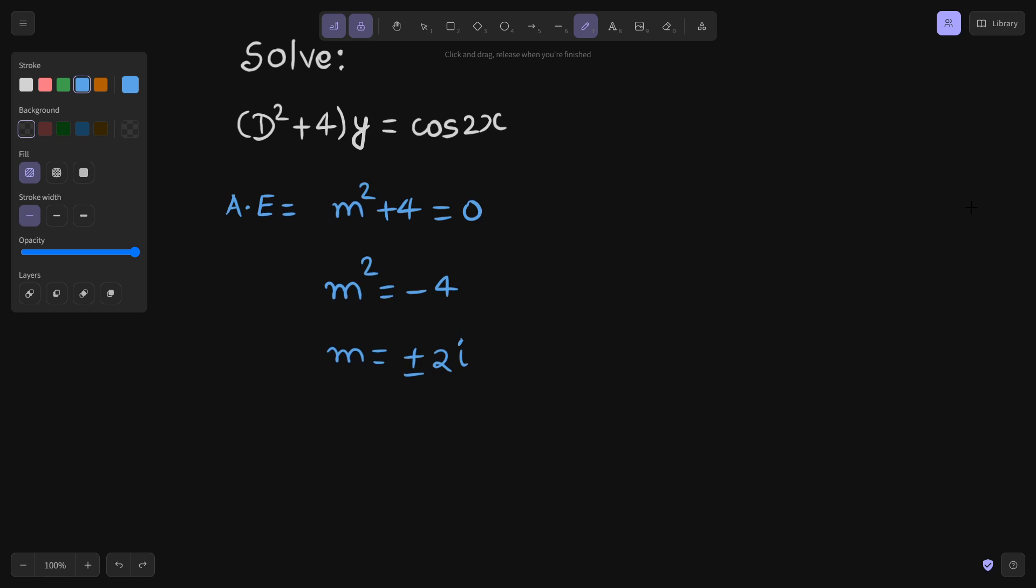In case roots are imaginary, then how we find the complementary function? Because you can write this like 0 plus 2 iota taking plus sign and 0 minus 2 iota if I take plus minus sign. If you can compare this to A plus iota b and A minus iota b, in that case your complementary function is of the form e^(Ax).